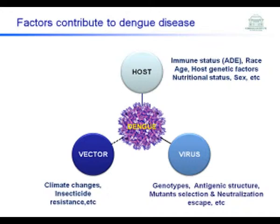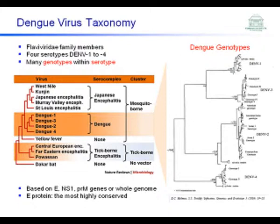There are four serotypes of dengue, but within each serotype there are many genotypes. Based on E-protein homology, there are lots of genotypes — within dengue 1 there are five at the moment, and then dengue 3, dengue 2, and so on. Please bear in mind that within the serotypes there are genotypes.